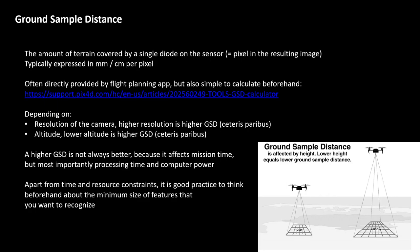A higher ground sample distance is not always better. It affects mission time because flying lower to the ground means a smaller image footprint — you cover less area per image, which is why ground sample distance increases as a pixel covers a smaller area. Your mission will take longer, and it will also mean an exponential increase in processing time and computer power needed to process all that data.